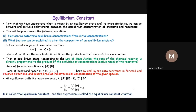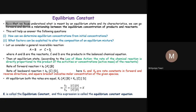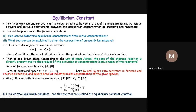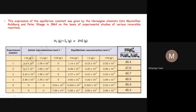Hey students, in our previous classes we have seen reversible reactions and how equilibrium is reached in a reversible reaction, and we defined the equilibrium constant. So if a general reaction is given as A + B ⇌ C + D, the equilibrium constant K is defined as the rate of forward reaction divided by the rate of backward reaction at equilibrium, which equals concentration of C times concentration of D divided by concentration of A times concentration of B. This is called Kc because we define the equilibrium constant in terms of molar concentration.